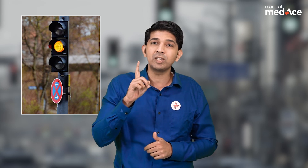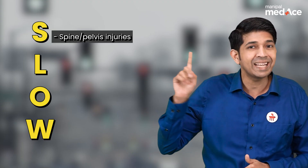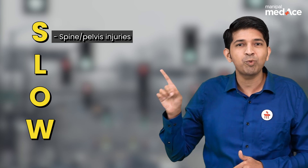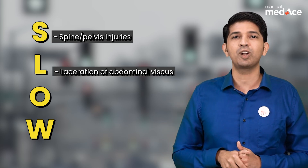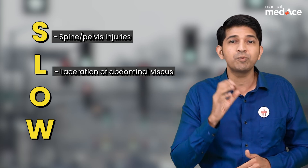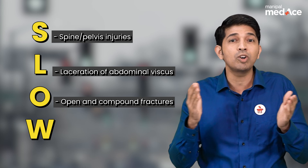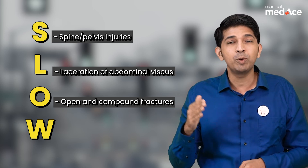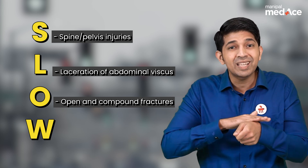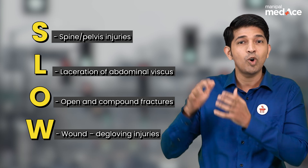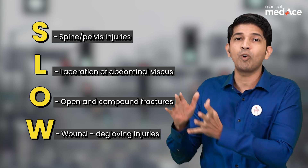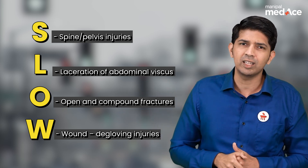At a traffic signal, when you see the yellow light, you slow down. Remember the mnemonic SLOW: S is for spine and pelvic fractures, L is for laceration of abdominal organs, O is for open or compound fractures, and W is for degloving wounds. All these fall into the second, or yellow, category.